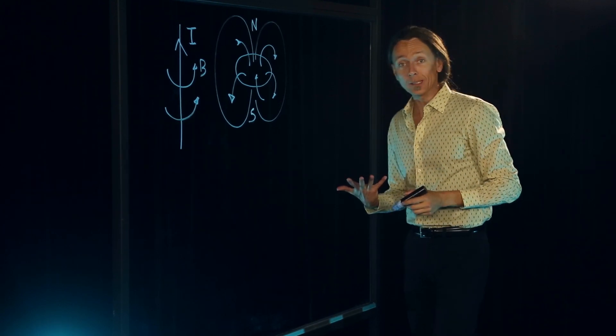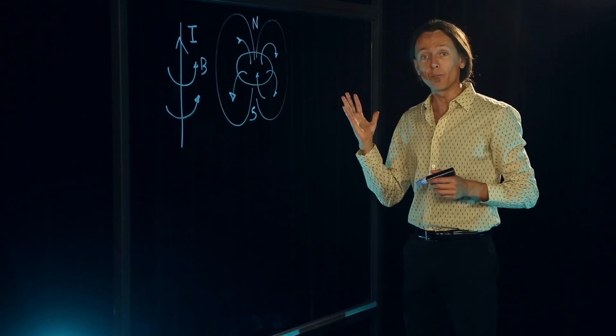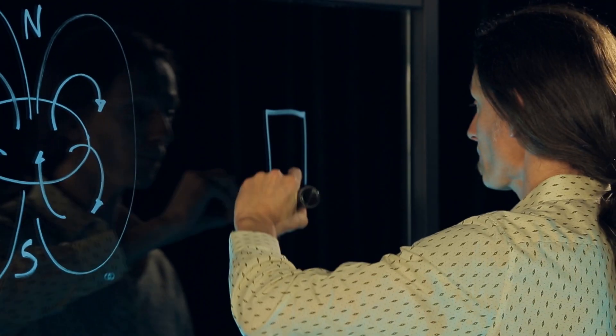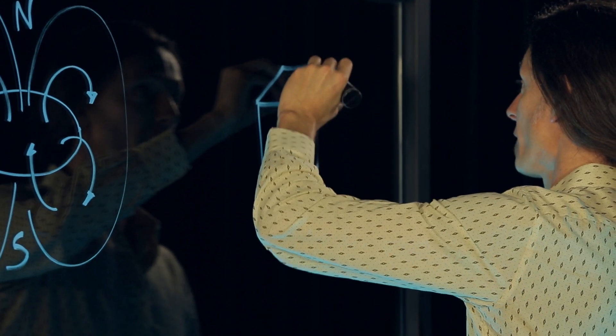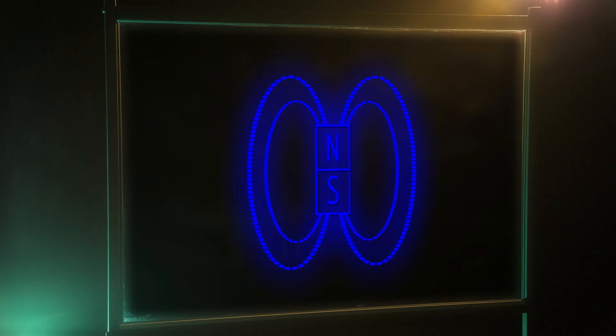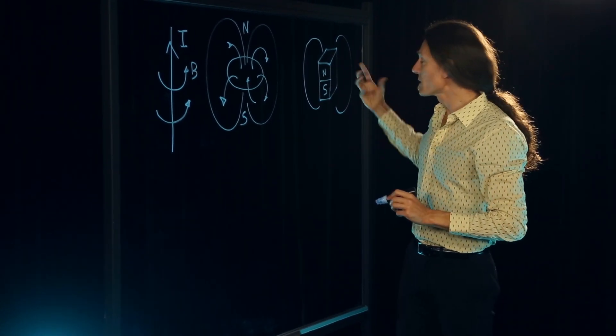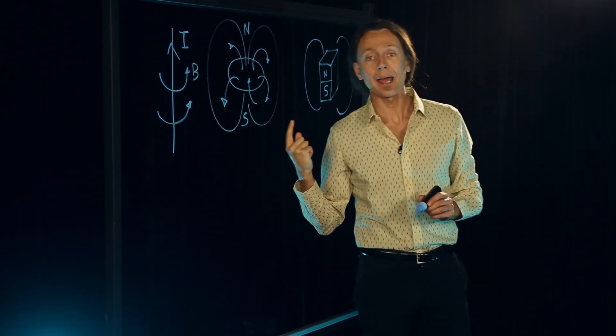And it was also known for a long time, and this is where things get complicated, that there are materials that without any electrical current produce a magnetic field out of themselves. These are called ferromagnets. And these are the objects that you use to attach photos to the fridge. So these ferromagnets produce the same type of magnetic field lines that are produced by a coil carrying current. And so here is where it becomes complicated. What is the reason why certain materials produce the same magnetic field as a coil that carries a current?